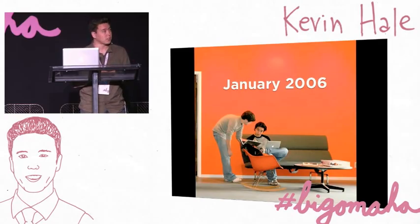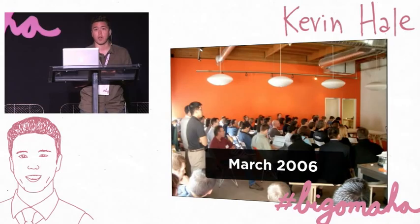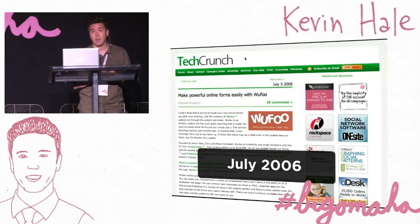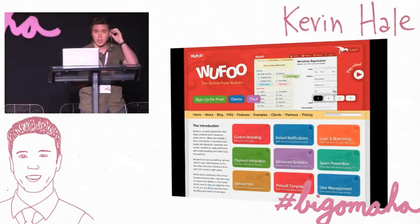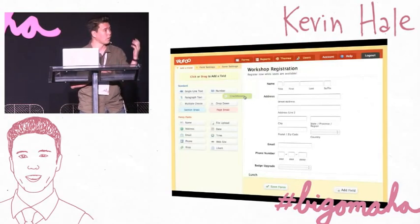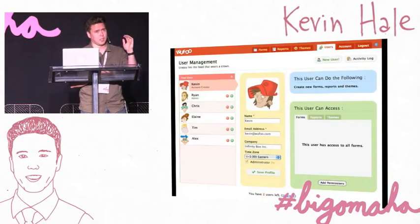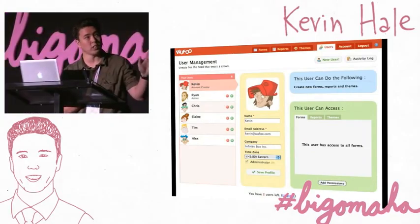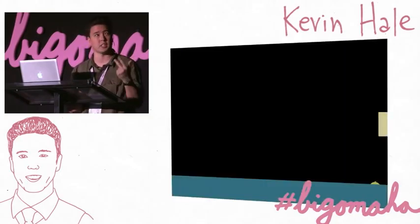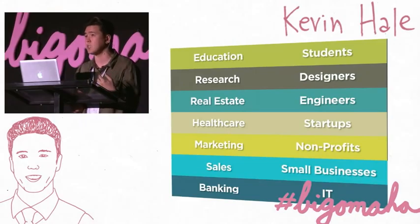We started writing our first lines of code in January 2006, and three months later had a prototype we demoed to a room full of investors. We secured angel funding from two investors, went back to Florida, and in the summer of 2006 launched the product. Nine months later we became profitable and eventually grew the company. The product we built was called Wufoo — an online HTML form builder that helps you create contact forms, design online surveys, and collect simple online payments. It's a database application at its core but it looks like it was designed by Fisher Price.